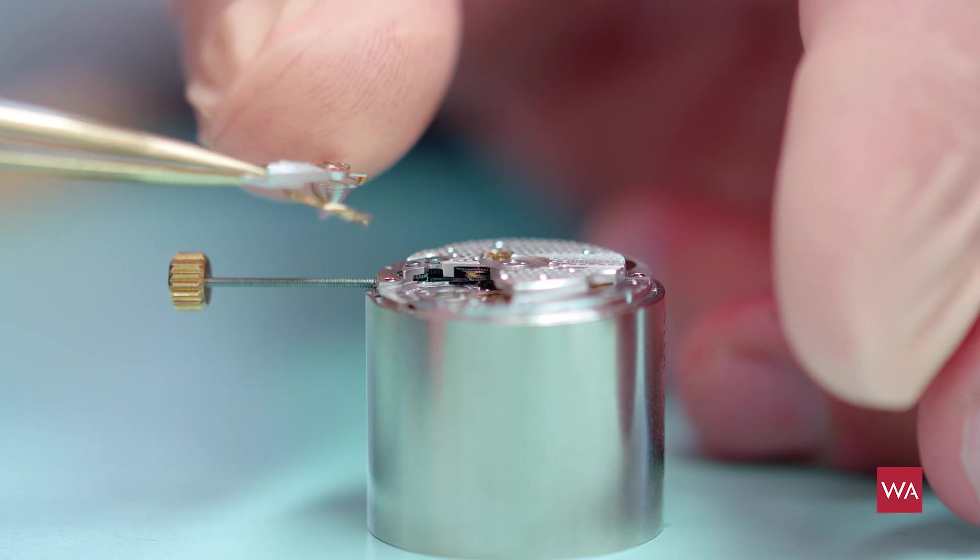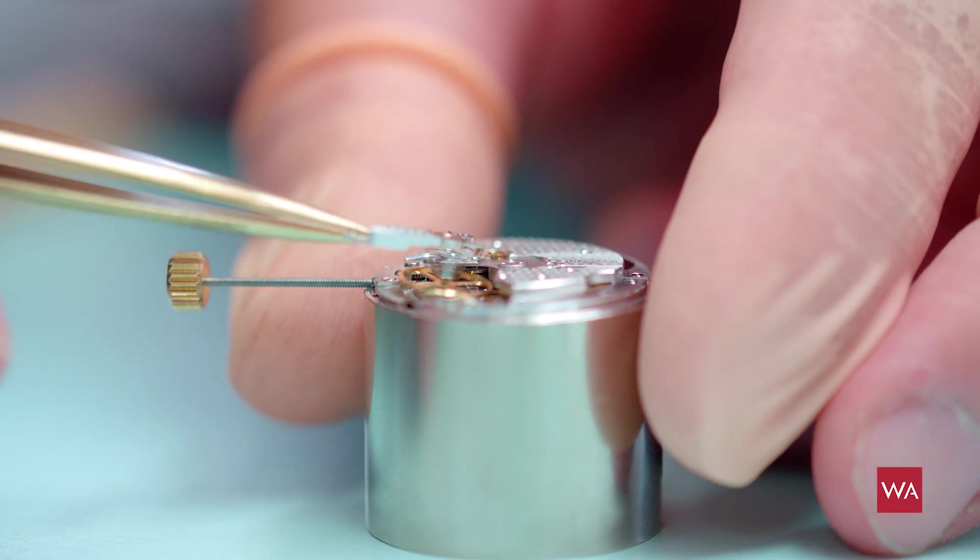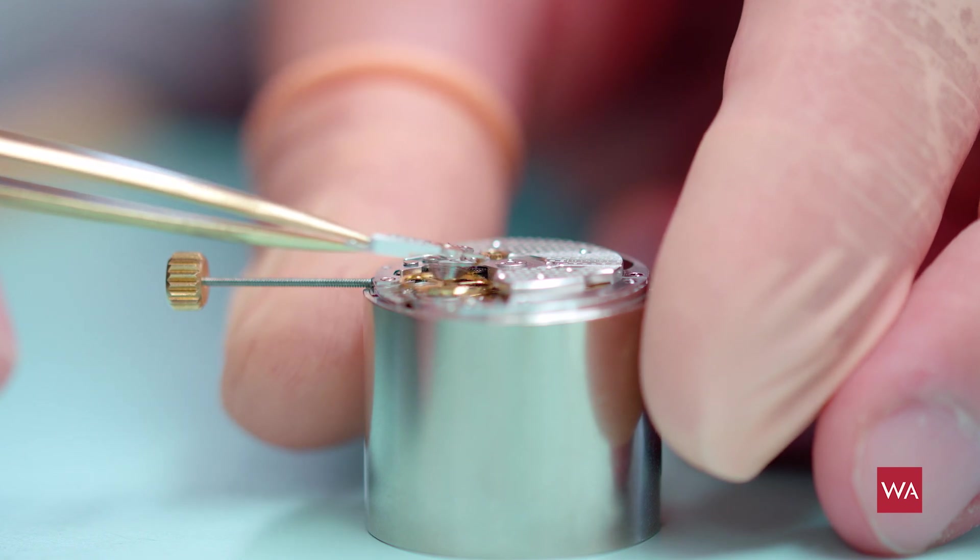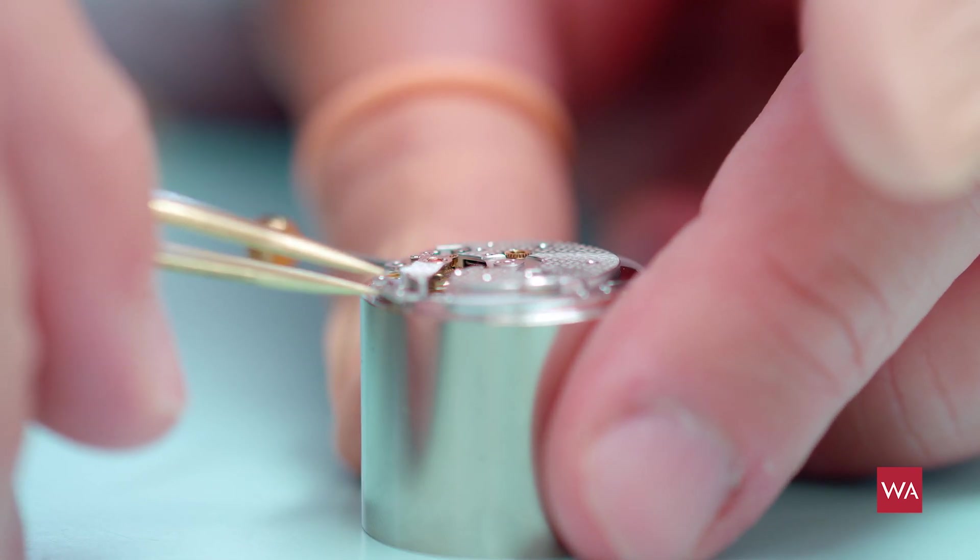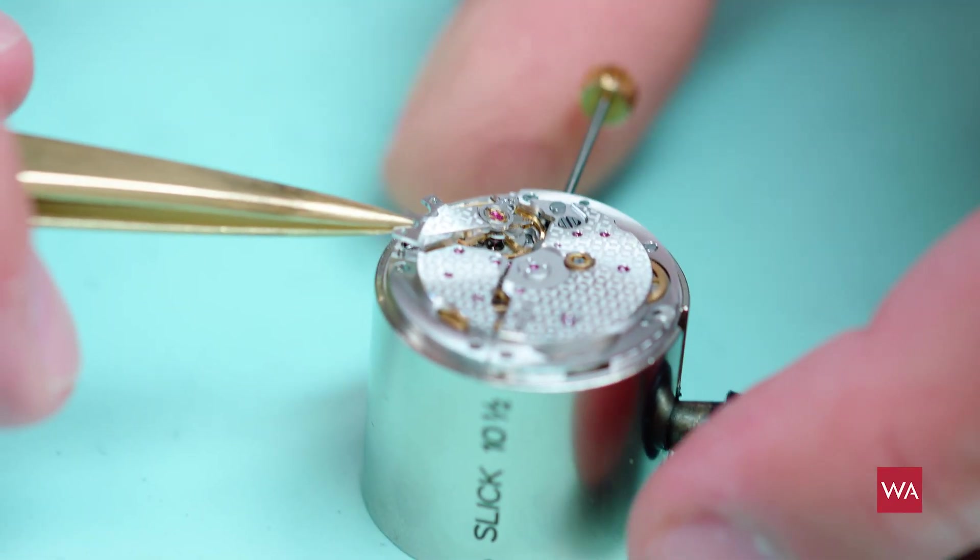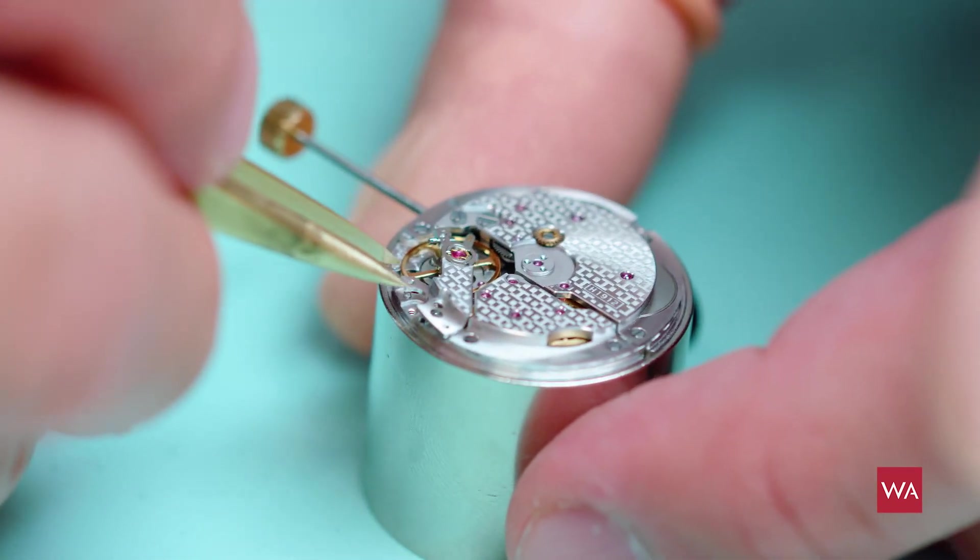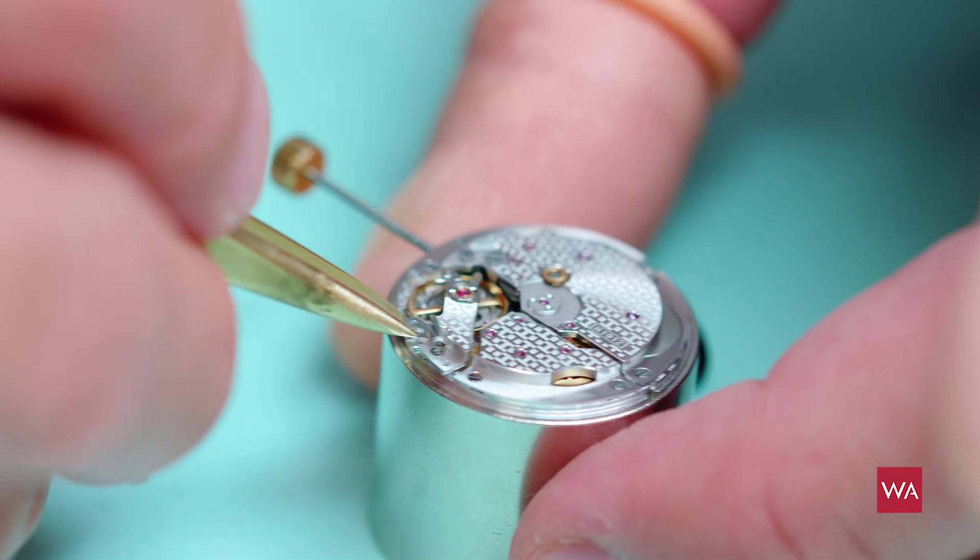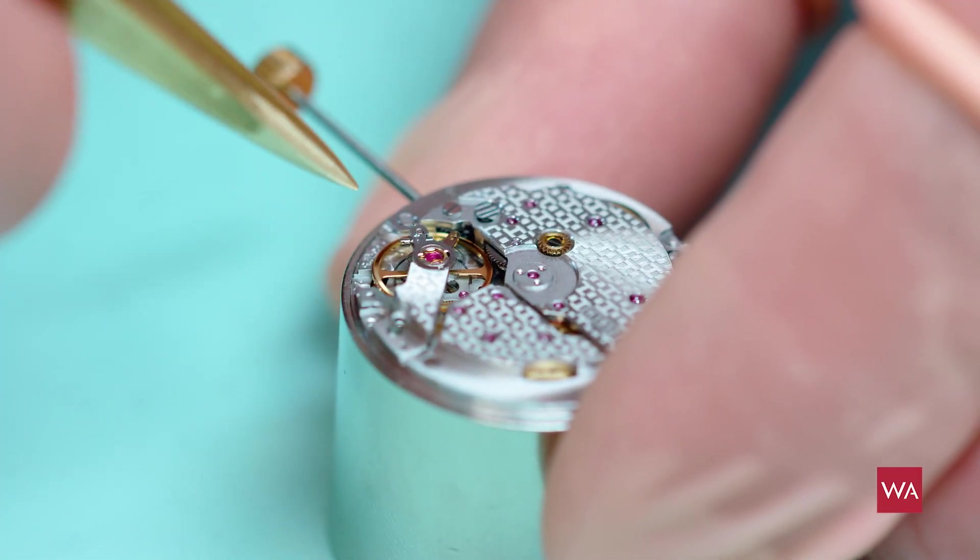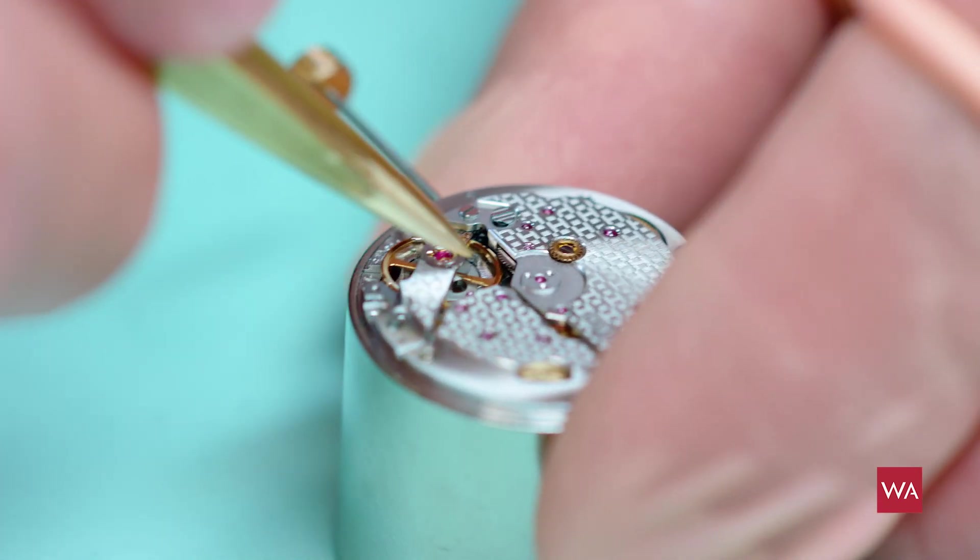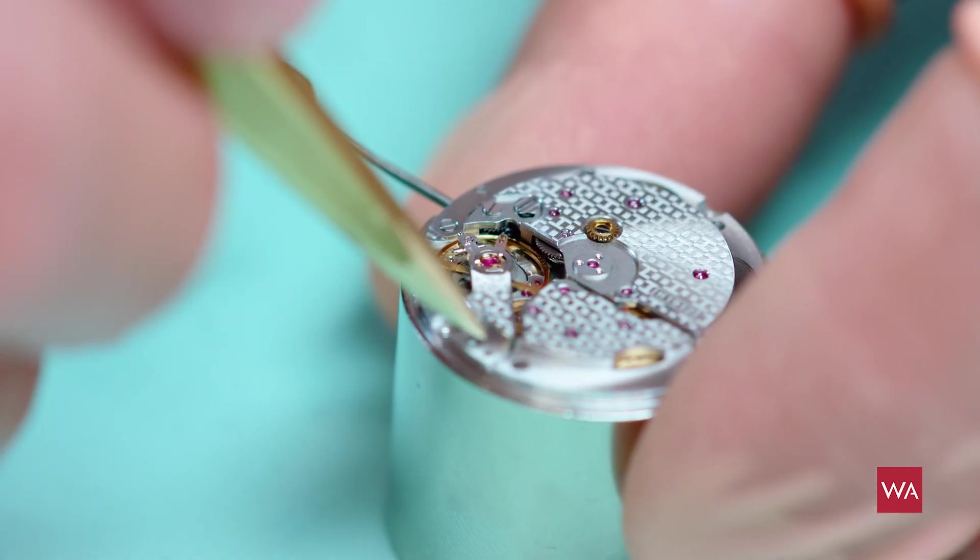Once all the parts of a mechanical movement have been conceived, manufactured, polished and treated on their surfaces, they are put together by a watchmaker and there is one specific particular moment. This is when the watchmaker inserts the anchor bridge with the balance wheel and the hairspring. And by inserting the anchor bridge, you will see the watchmaker needs some movements to the left, some movements to the right. By inserting the anchor bridge, all of a sudden, the balance wheel starts to oscillate.